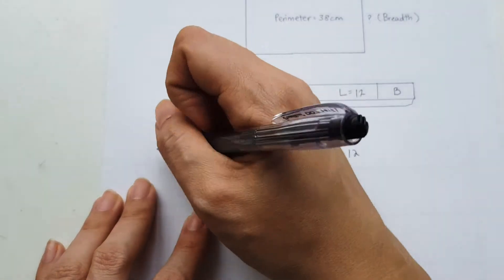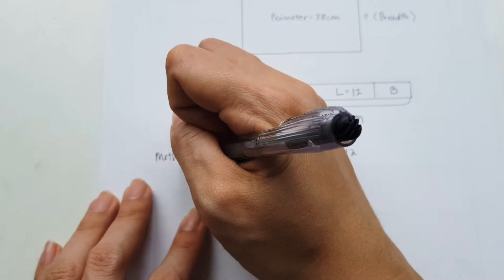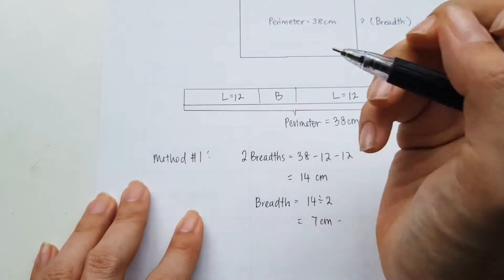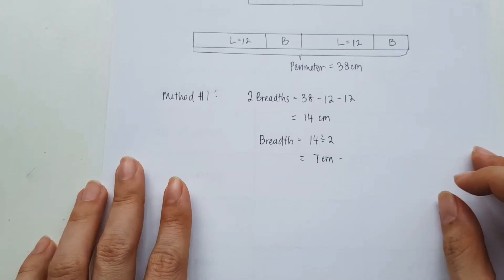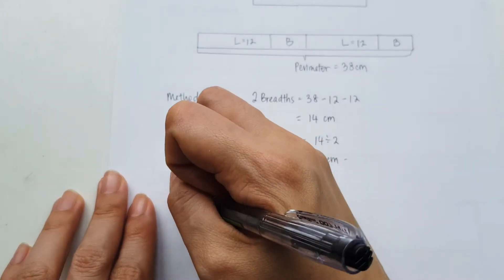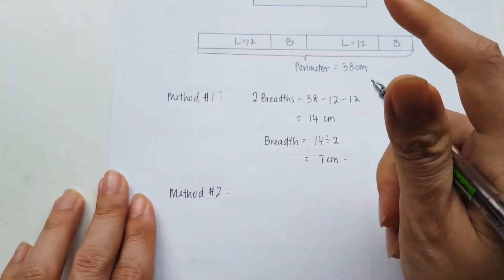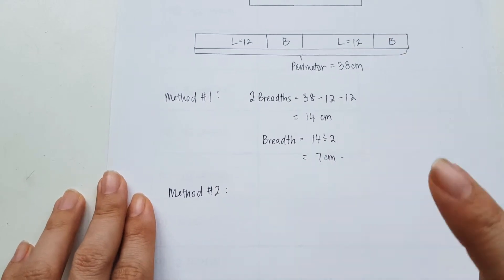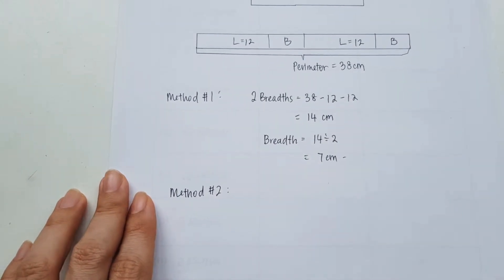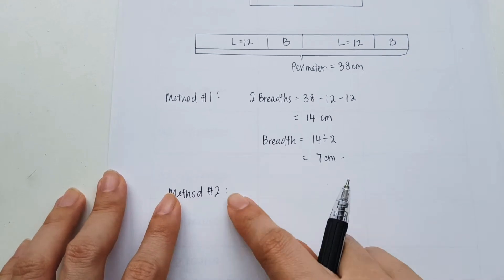Now this is the first method to do it. And I'm going to call it method 1. Now, I'm going on to the second method. There's another way to do this. And some people might find this easier. Honestly, I do find method 1 easier. But some of you might prefer to use method 2.